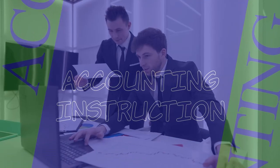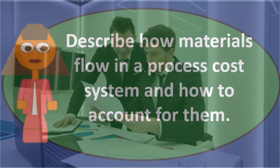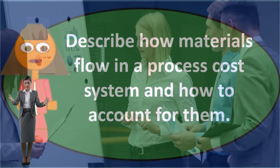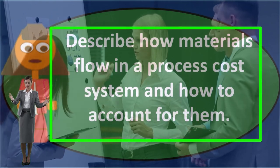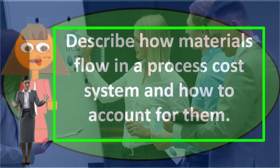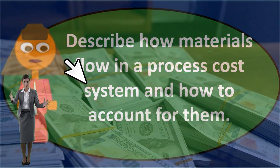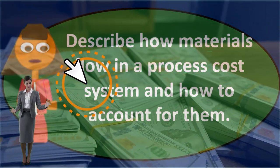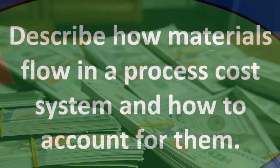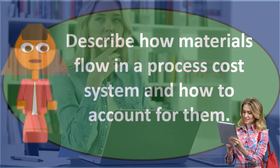In this discussion, we will address the question: describe how materials flow in a process cost system and how to account for them. When facing a discussion or essay question like this, we first want to look at the key terms — materials flow and process cost system. We want to define what a process cost system is before exploring how materials relate to it.